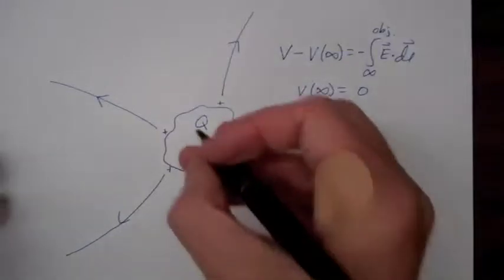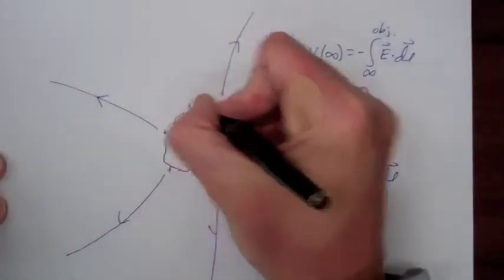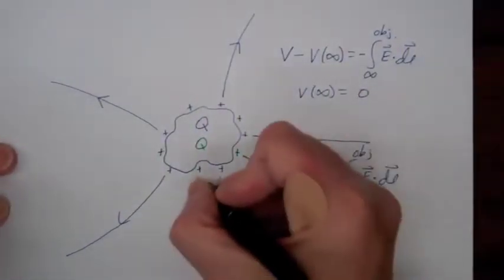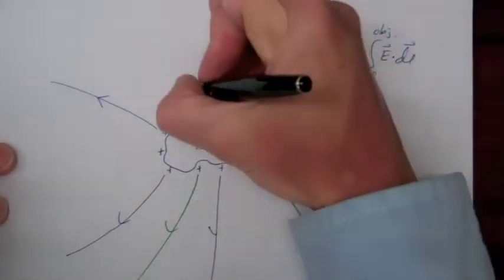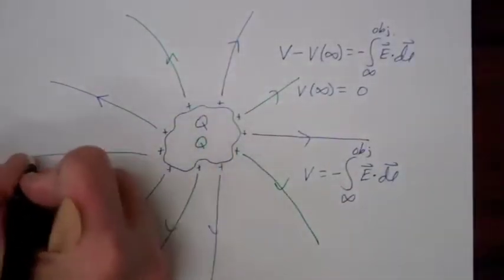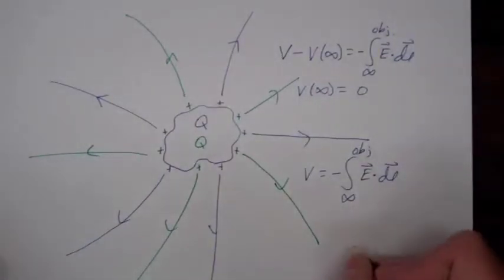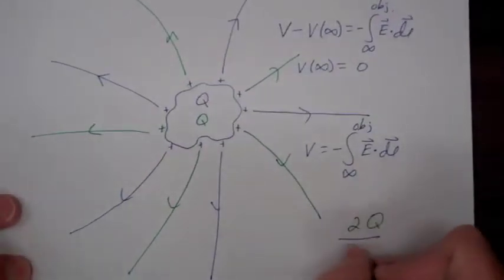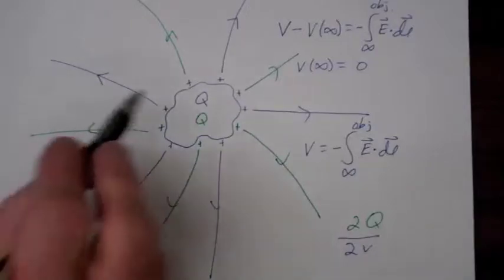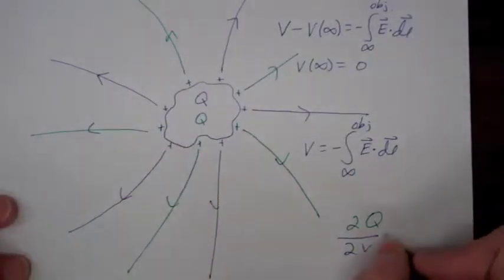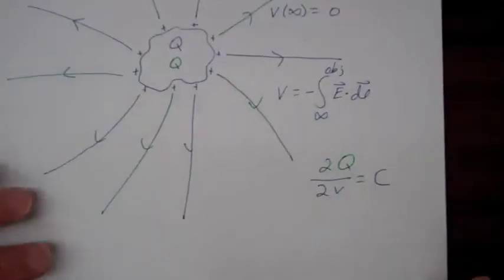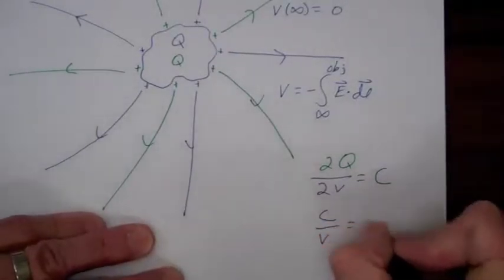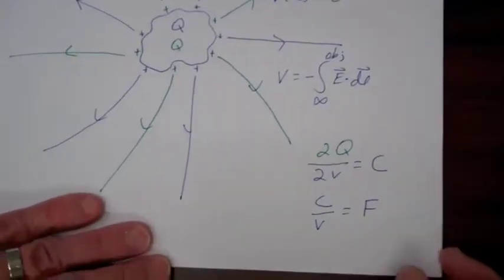Now let's go and add another plus q to the object, so we're doubling the charge. Clearly the total electric field is going to be doubled. If we've doubled the electric field everywhere, we've doubled the voltage. So we see that the ratio of the charge on the object to the potential of the object is going to be a constant, and that constant is called the capacitance. It will have units of coulombs per volt, which is designated as a farad in honor of Michael Faraday.